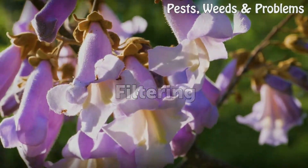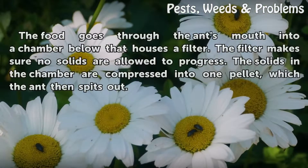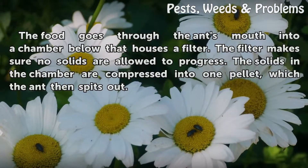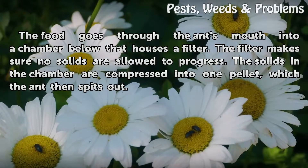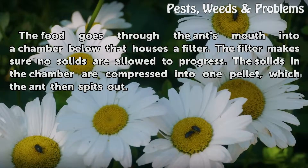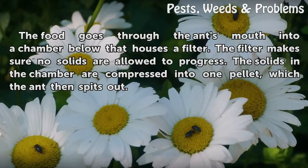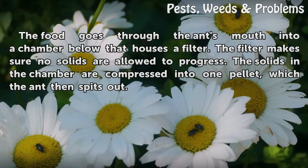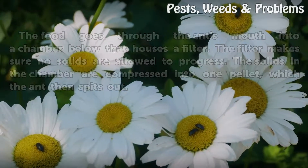Filtering: The food goes through the ant's mouth into a chamber below that houses a filter. The filter makes sure no solids are allowed to progress. The solids in the chamber are compressed into one pellet, which the ant then spits out.